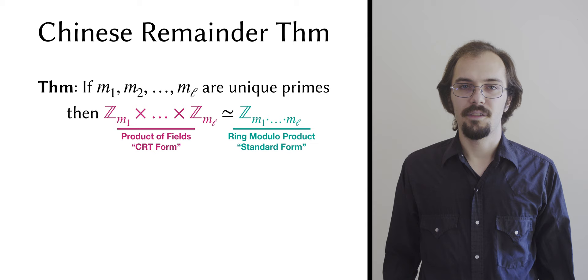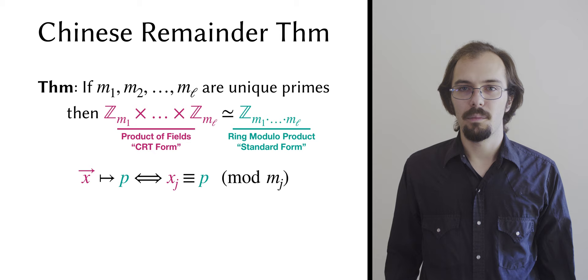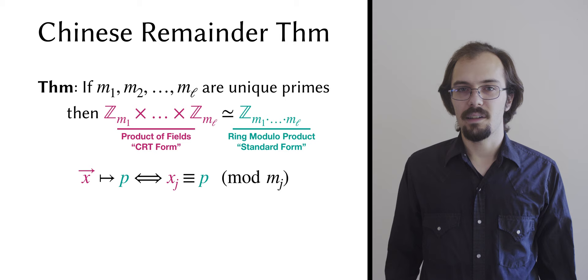The Chinese remainder theorem also gives us another important fact. A set of values in CRT form, which we'll call x, mapped to a value in standard form, we'll call this value p, if and only if the jth element of x is congruent to p modulo the jth prime for all j. This means that if you select a CRT form vector x with no zero elements, then the corresponding standard form value p will not be divisible by any of the primes in the primordial vector.